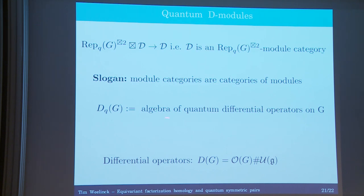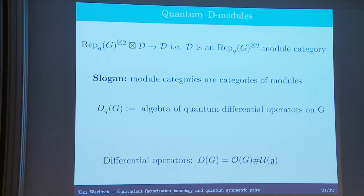Rather than running through the computation, let me explain what that algebra is and where it appears. The particular algebra we're interested in is the algebra of quantum differential operators. Think of differential operators on a group G: we have functions on the group, the enveloping algebra of vector fields, and a cross relation because moving vector fields past functions takes a derivative. You can write that as a specific crossed tensor product of UG and OG — a very general Hopf algebra construction known as the Heisenberg double.